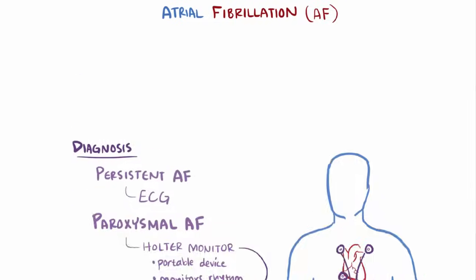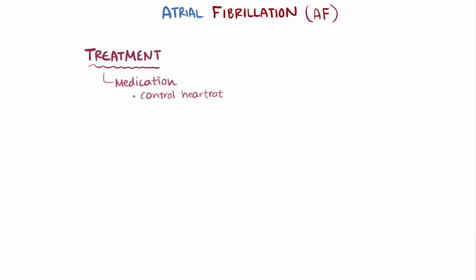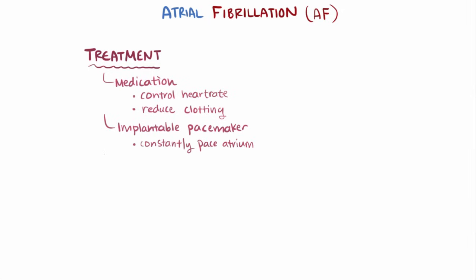Since AF is caused by such a diverse range of issues, treatment is generally different from patient to patient. Certain medications that help control the heart rate might be given, or medications that reduce the likelihood of blood clot formation and therefore prevent stroke. Patients might also receive an implantable cardiac pacemaker, which, by constantly pacing the atrium, can reduce the chance of an AF episode.